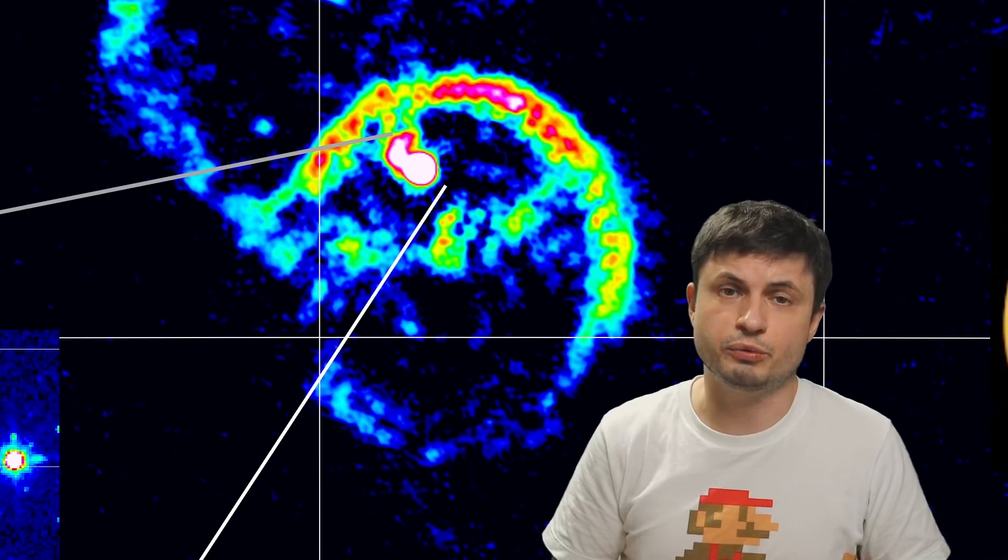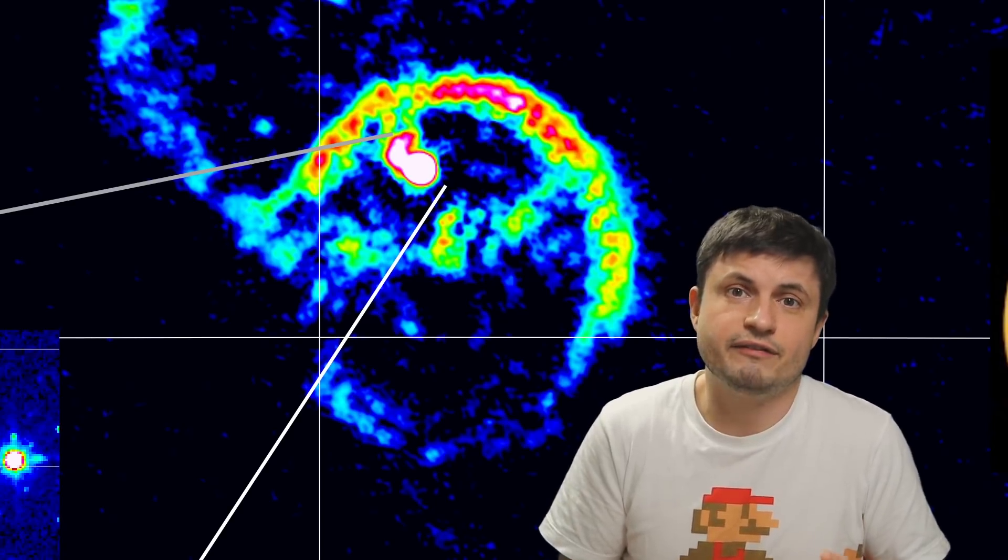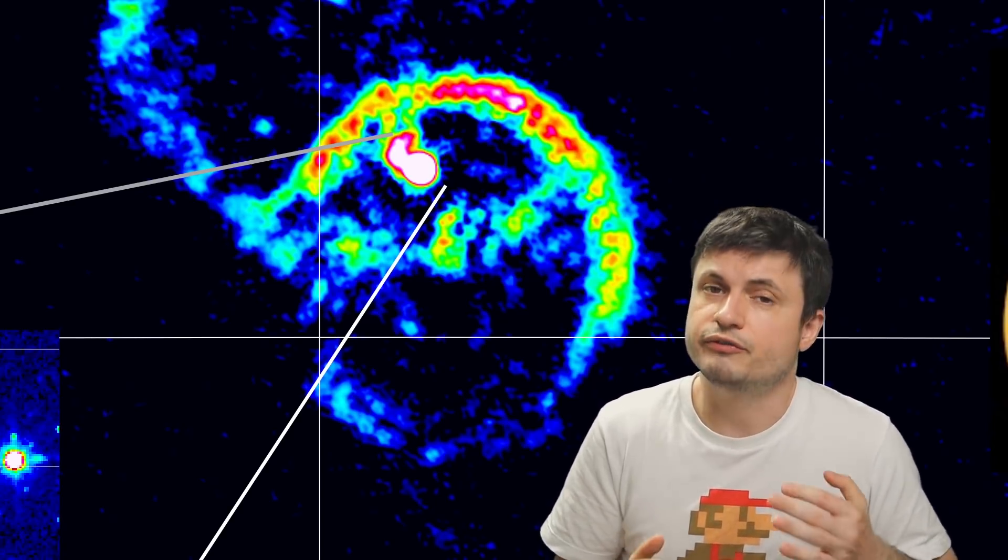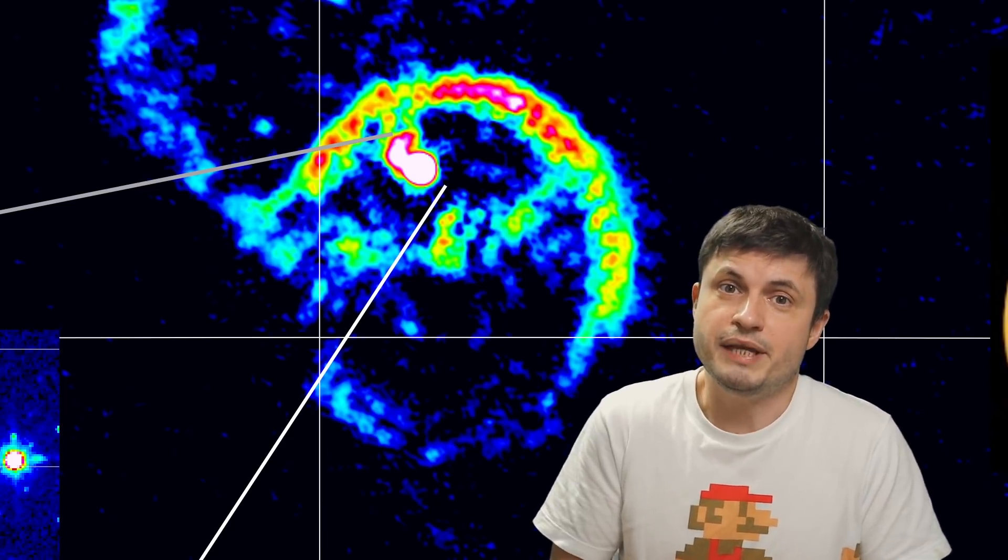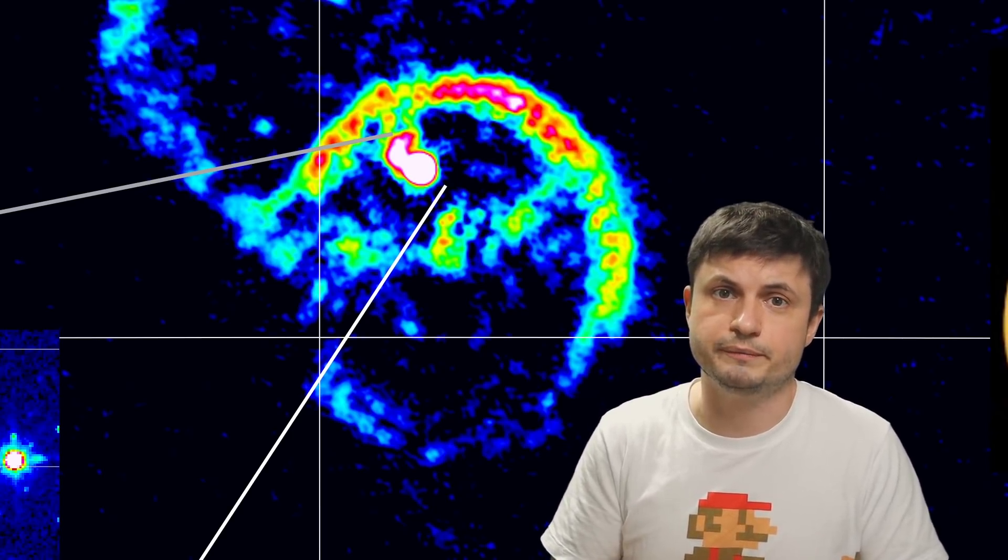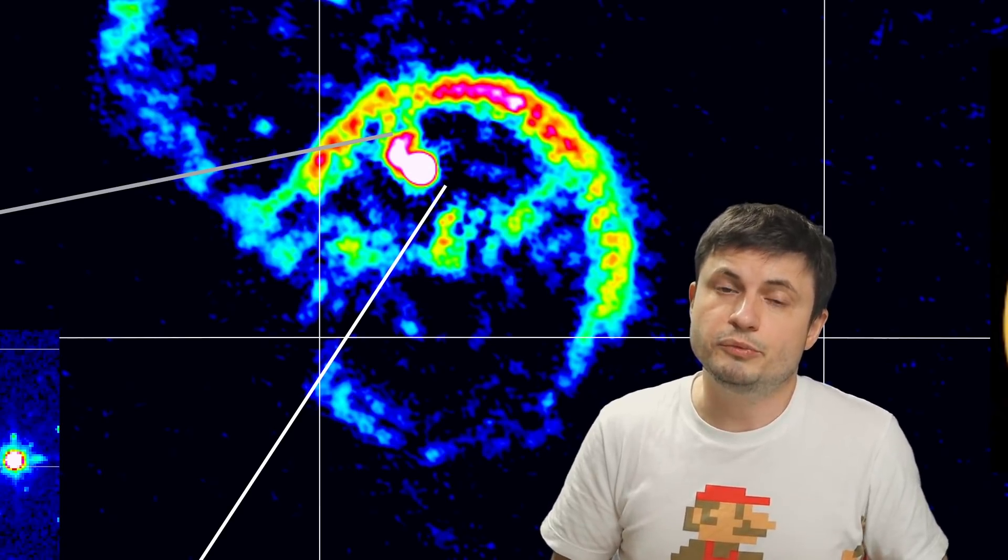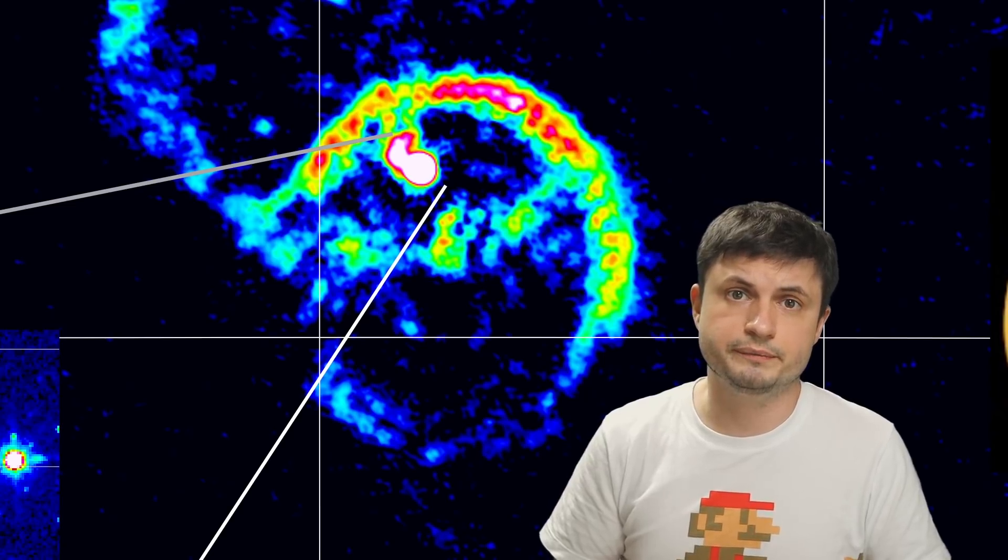But unlike fast radio bursts that we're detecting from pretty much everywhere with quite a lot of frequency, odd radio circles don't really have a very large sample size yet. So it's very difficult to sort of explain what's happening here and especially make a confident prediction on what creates these objects. Because right now there's just not enough observation and not enough of these objects have been found. But at least three of them do seem to have some kind of a correlation with a galaxy in the center of course. And not just any galaxy, a radio galaxy.